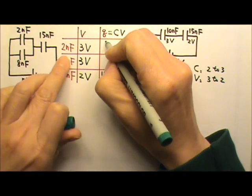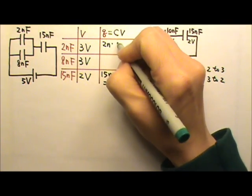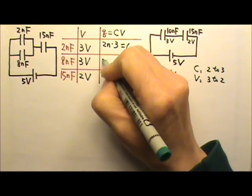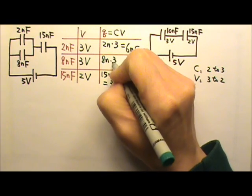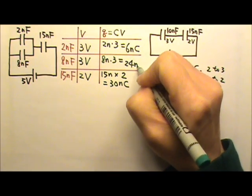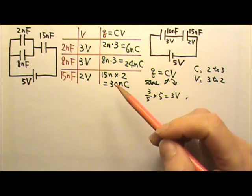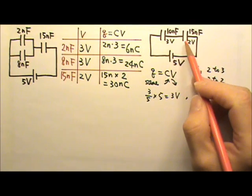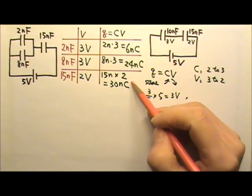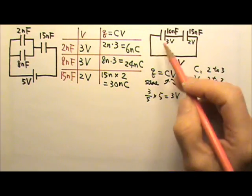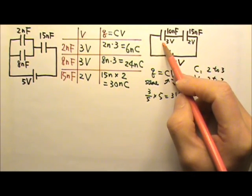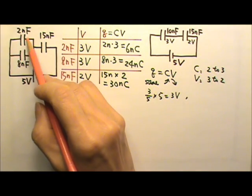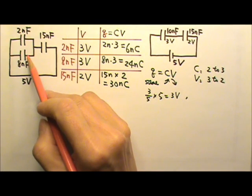The charge is Q equals CV. For the 2 nanofarad: 2 nano times 3 gives 6 nanocoulombs. For the 8 nanofarad: 8 nano times 3 gives 24 nanocoulombs. We can check our work by looking at the charges. The 10 nanofarad and 15 nanofarad are in series, so they get the same amount of charge. The 15 nanofarad gets 30 nanocoulombs, so the 10 nanofarad equivalent gets 30 nanocoulombs as well. For two capacitors in parallel, they share the total charge.